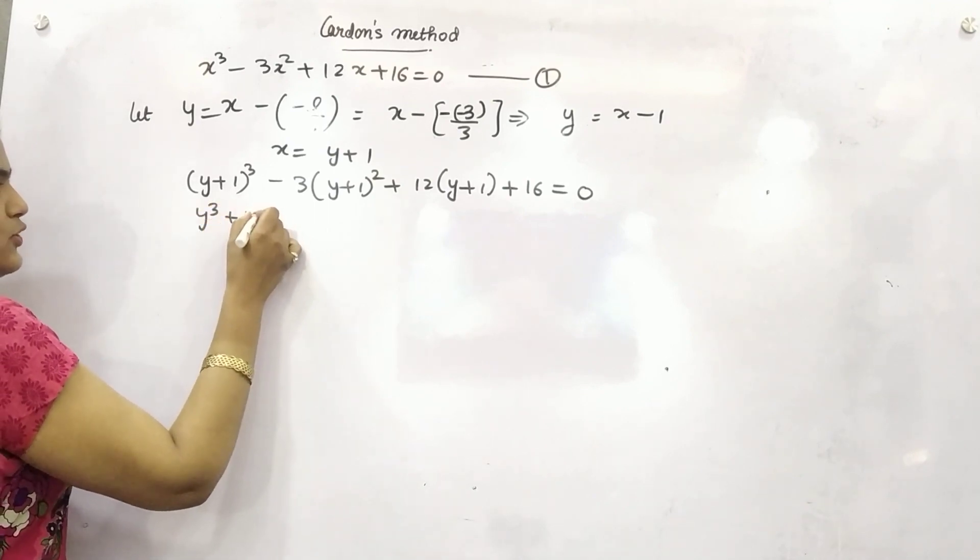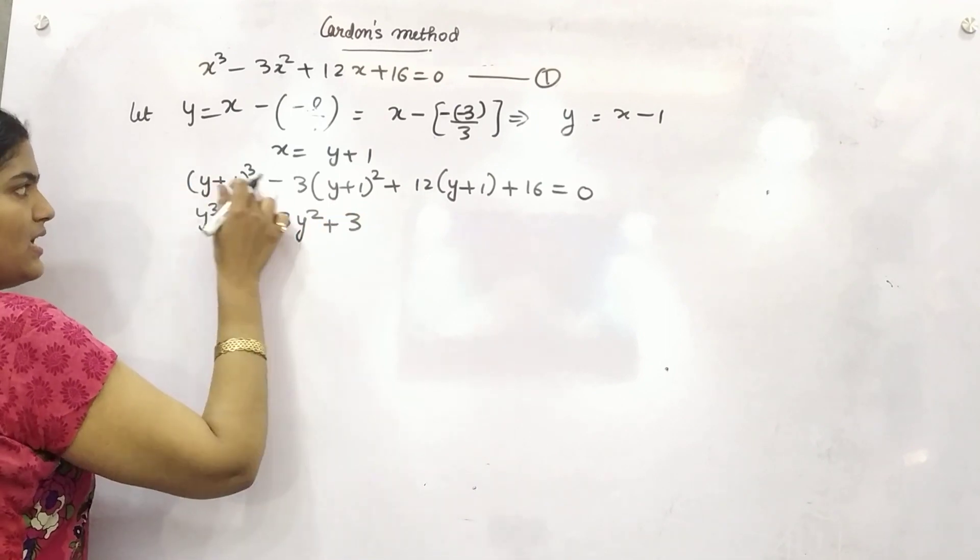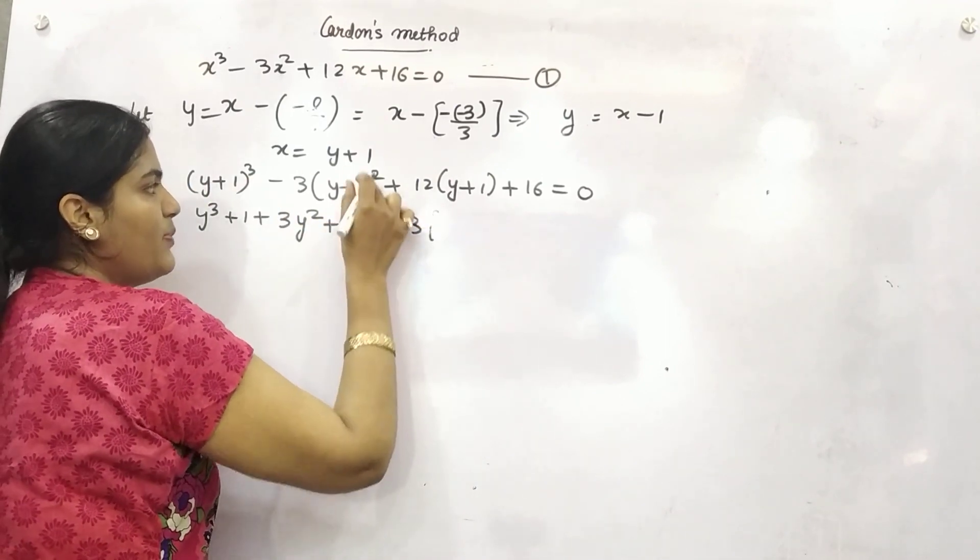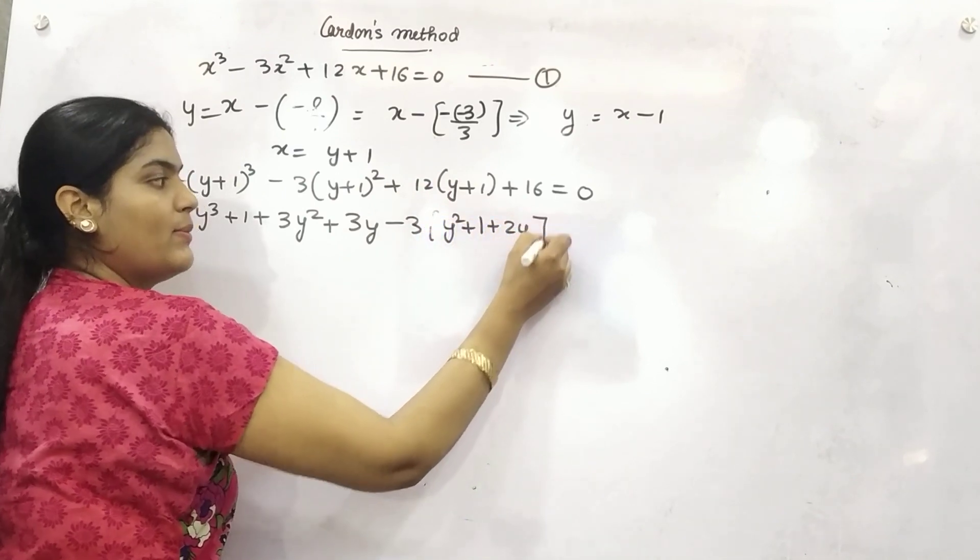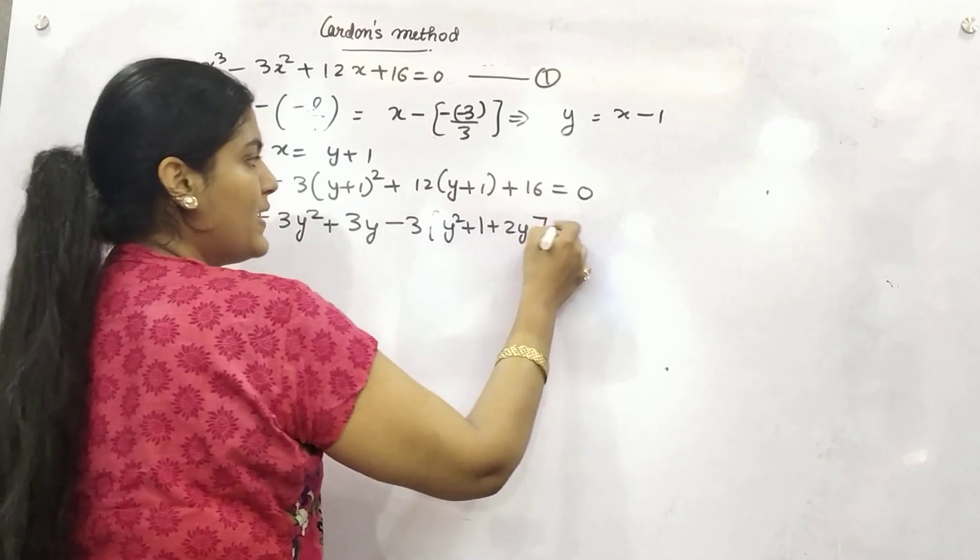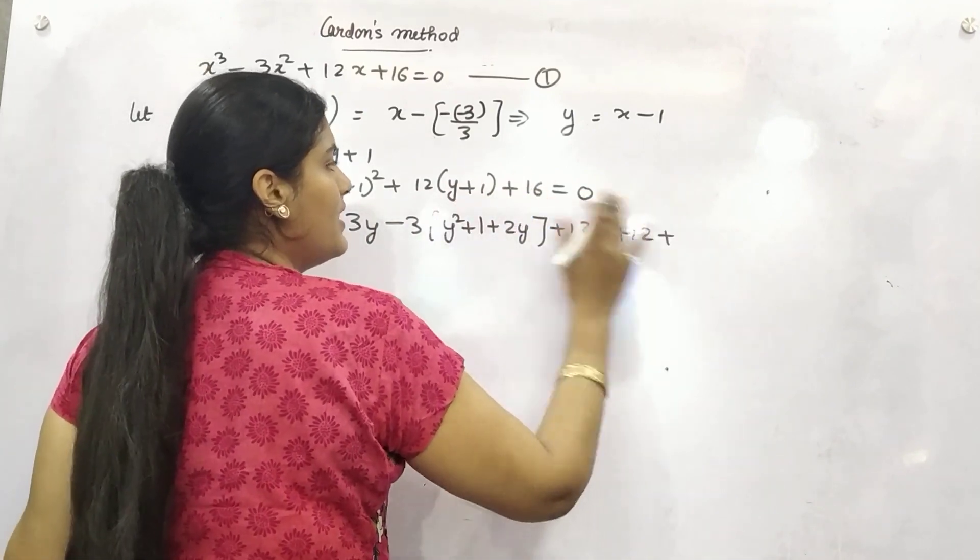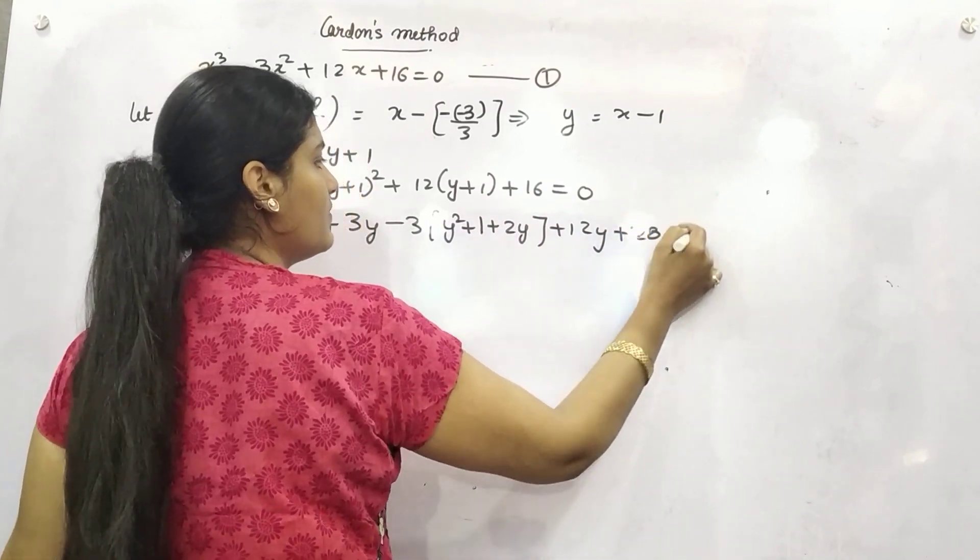a cube plus b cube plus 3a square b plus 3ab square. 1 square is 1 minus 3(a plus b square). a square plus b square plus 2ab. Then after 12y plus 12 times 1 is 12. Let's add it up. 12 and 16, 28.